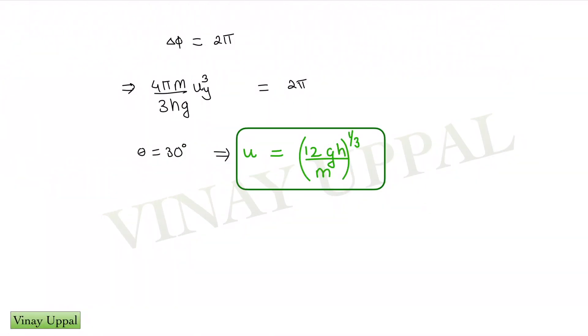Just substituting Δφ as 2π, you will get the value of uy and I can write uy as u sin 30, that is u/2. Simply substitute it there and you should get this as the value of u. The value of n would be 12.